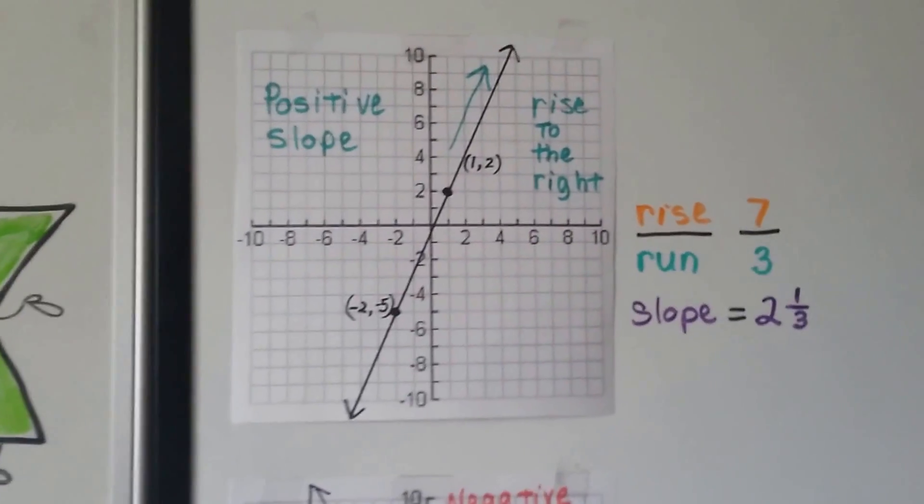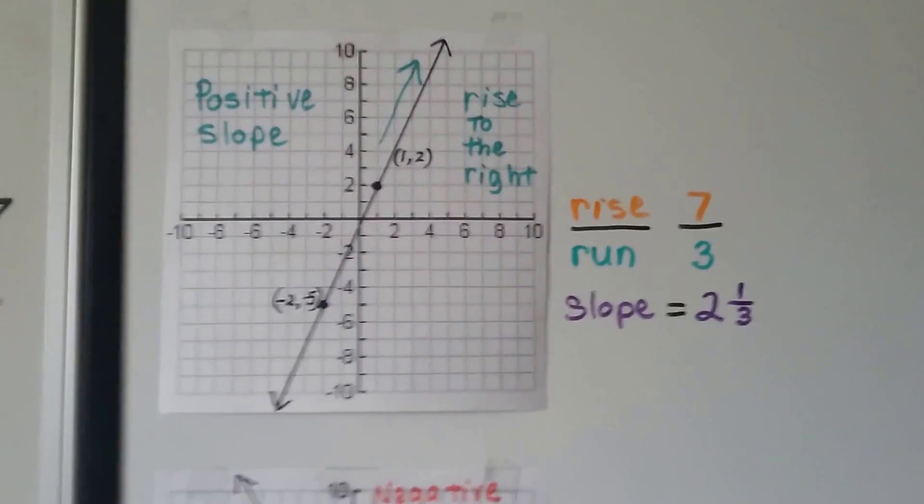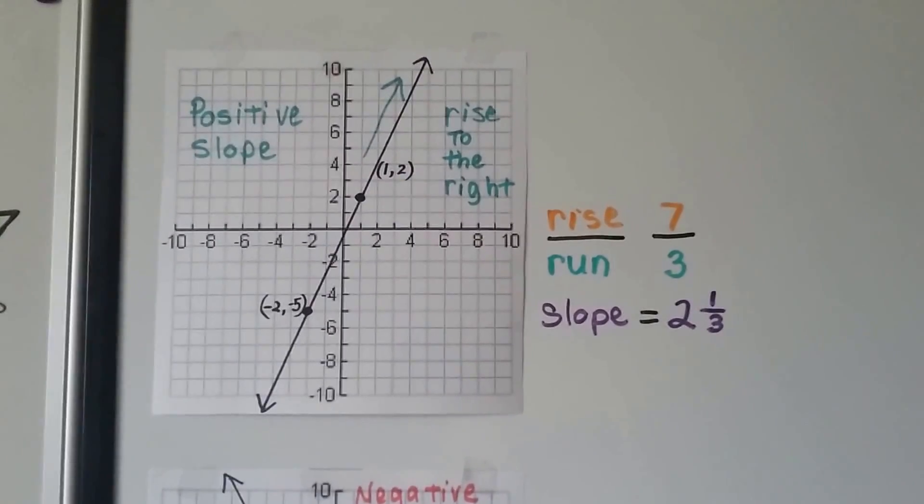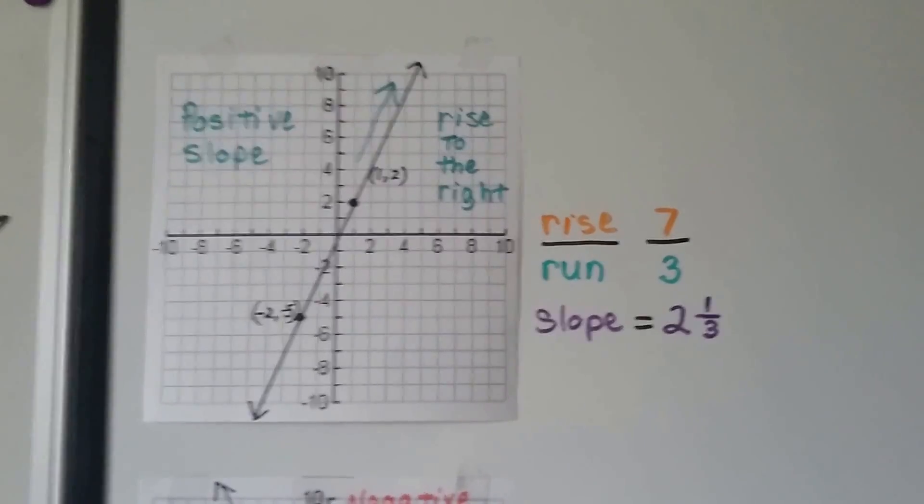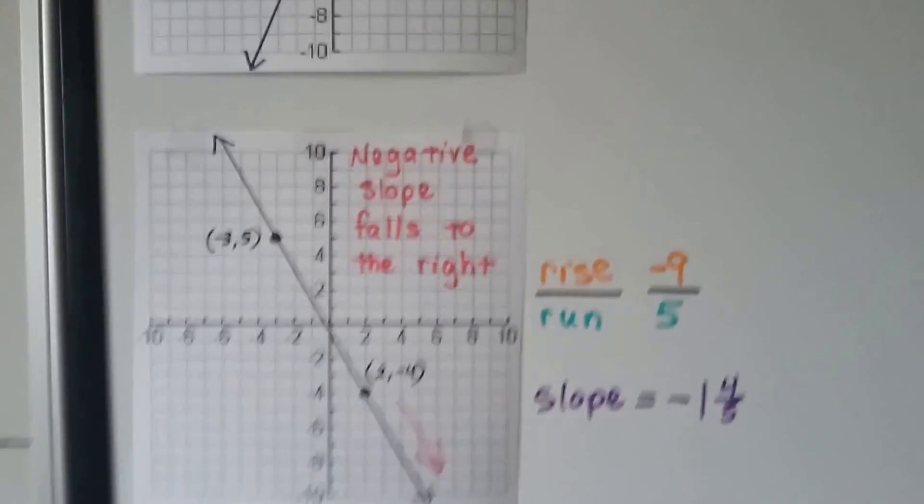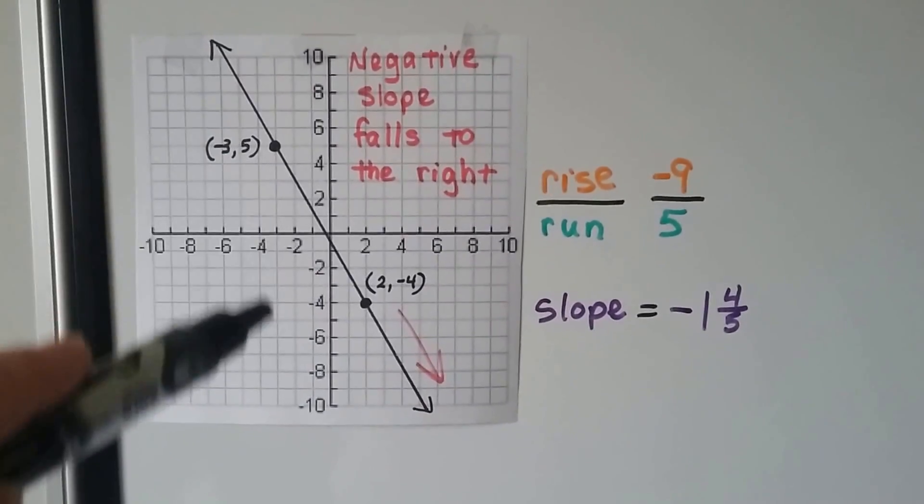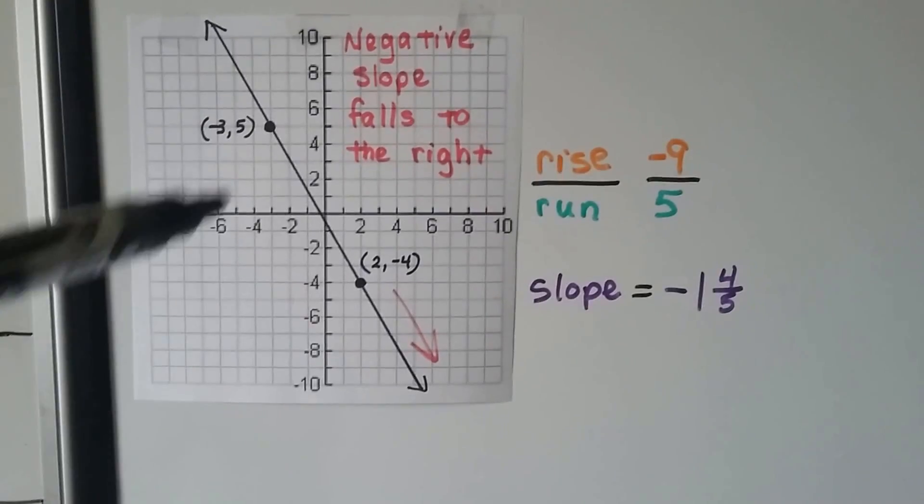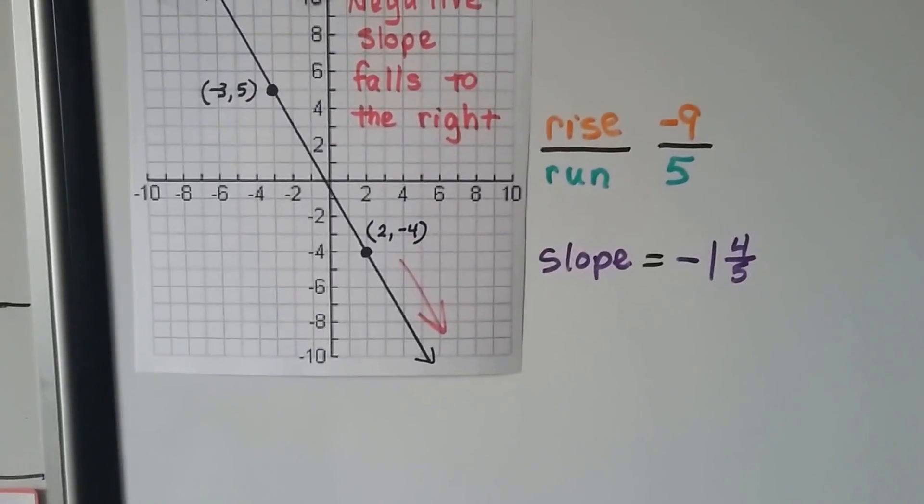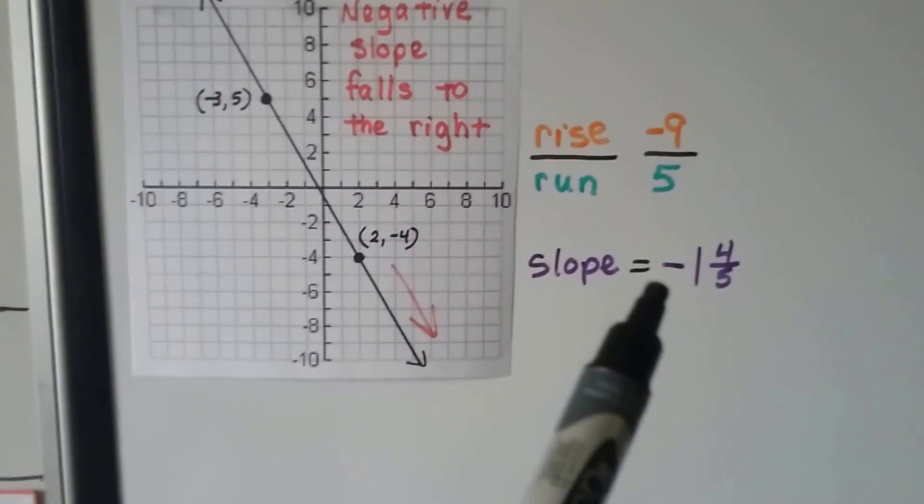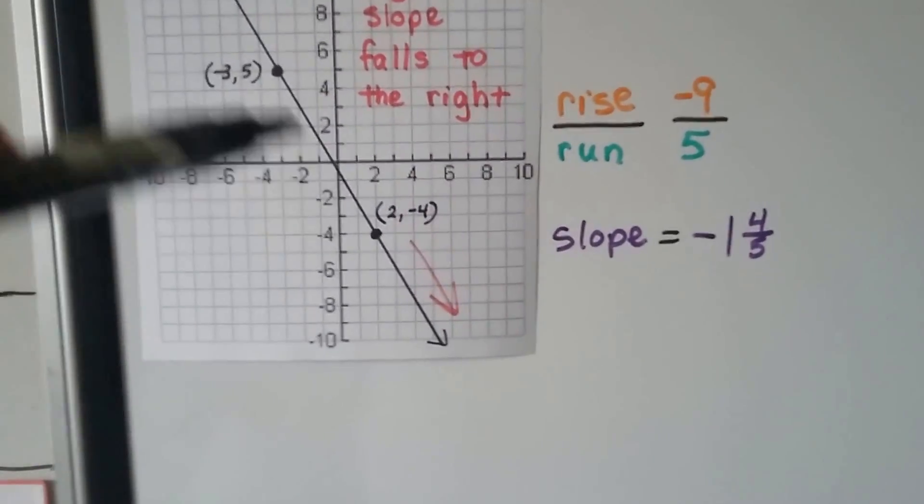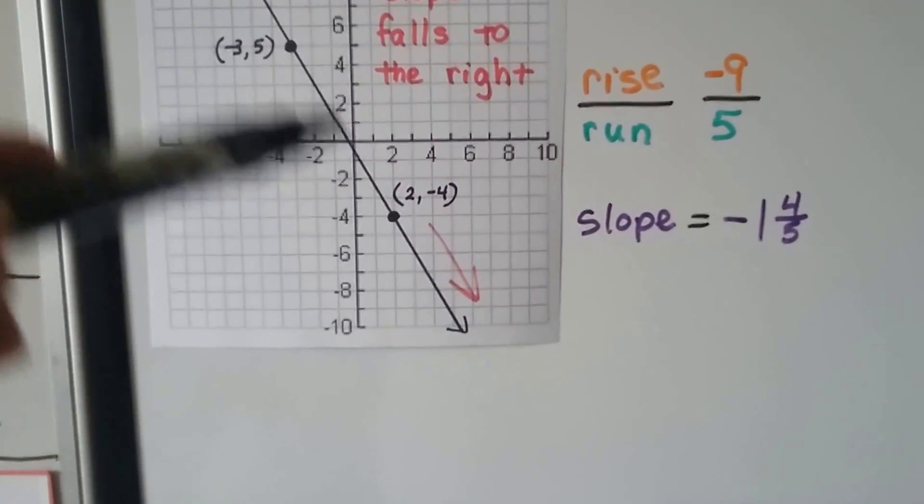So here's a positive slope. It's going to rise to the right. And if we count the rise and the run, we get a seven divided by a three, and our slope is two and one-third. So a slope could be a mixed number, a fraction, a decimal. This negative slope, when we count the rise and the run, we go down 9, so it's a negative 9, and we go over 5. So we have a negative 9 divided by 5, and that comes out as negative 1 and 4 fifths. To get from this first point to this second point, we have to go down. So it's a minus. It's falling.